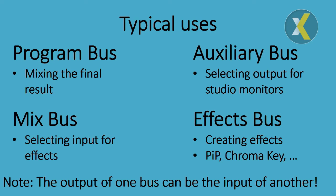So to summarize, we have four different types of buses. Three of them can have one source selected at a time, while the effects bus is specifically used for creating more complex results by combining multiple sources — for example, for picture-in-picture, side-by-side, or other types of combined effects. The chroma key is also in the effects bus. And do remember, the output of one bus can be used as the input of another, so you can create complex routing scenarios.